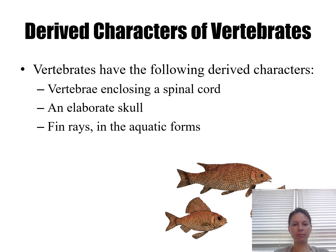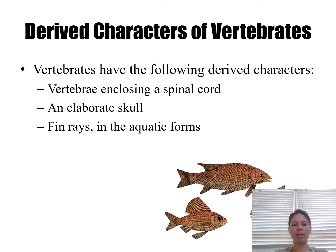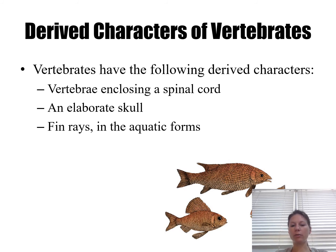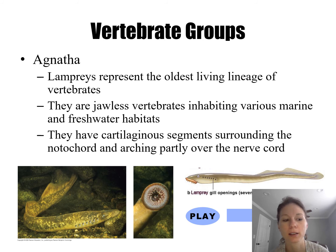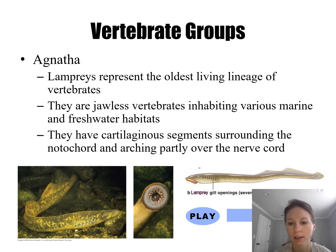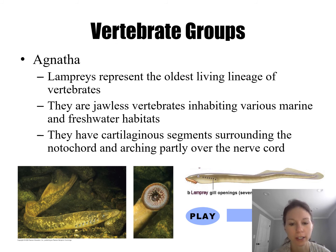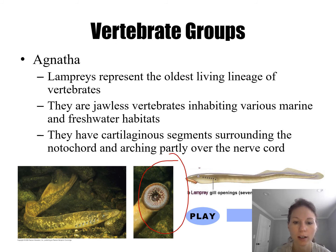Now we'll look at animals that actually have a backbone. They all have a vertebral column that protects their spinal cord, a more elaborate skull with more elaborate senses, and aquatic forms have fins. Moving up on the chordate phylogeny, we look at lampreys — they have a backbone and a cranium, but no jaws. They have a sucker-like mouth covered in rows and rows of keratinized teeth.